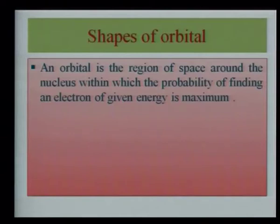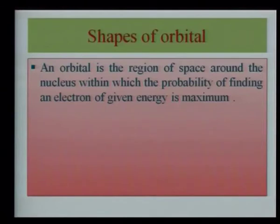An orbital is the region of space around the nucleus within which the probability of finding the electron of a given energy is maximum. The shape of this region gives the shape of the orbital.